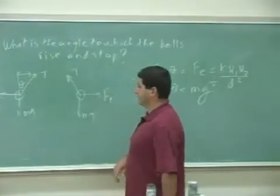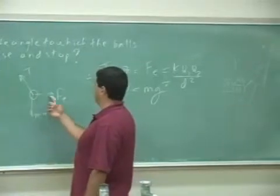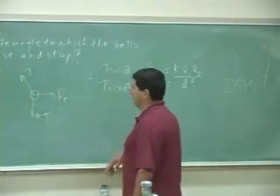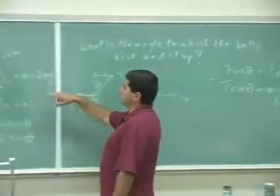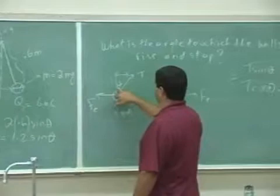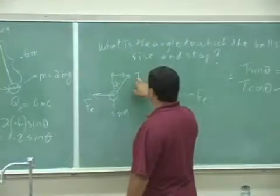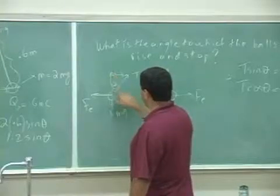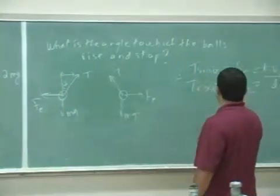On the right ball, the electrical force is to the right, the tension is to the left, and mg is down. If this is the theta angle, then this is the same as this angle. I have T cosine of theta, the vertical component, must equal mg.